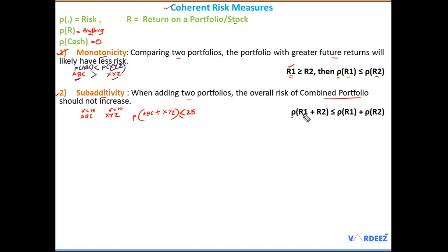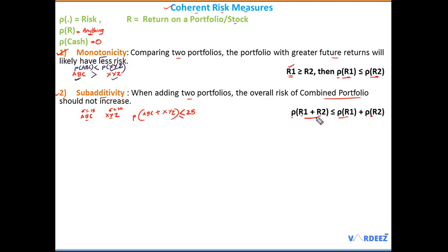Mathematically, the risk of a combined portfolio R1 and R2 should be less than or equal to the sum of the individual risks. This reflects that combining portfolios should not increase overall risk — that is what we mean by sub-additivity in coherent risk measures.